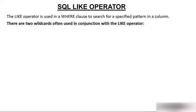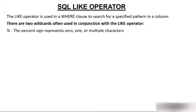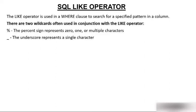There are two wildcards often used in conjunction with the LIKE operator. The percent sign (%) represents zero, one, or multiple characters, while the underscore (_) represents a single character.